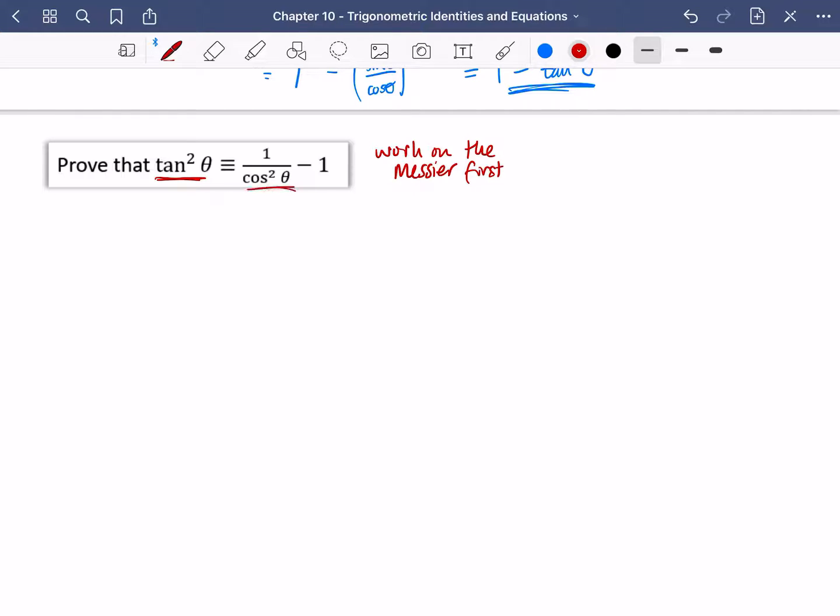Work on the messier side first. Now when I look at this, I've got this side or this side. Which do you think is messier? Have a think to yourself. I think the messier side is this one. There's more that I can do to it. I can add those two things together. So I'm going to start off by actually working on this.